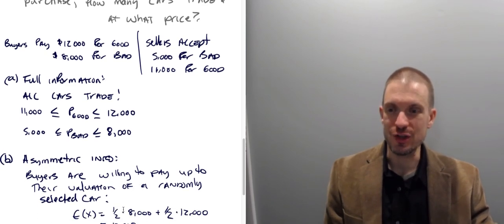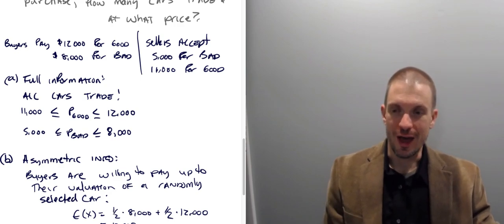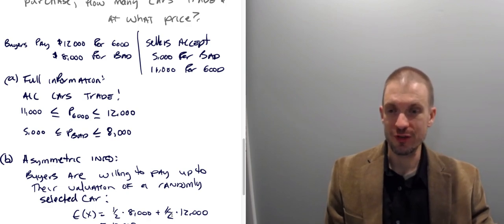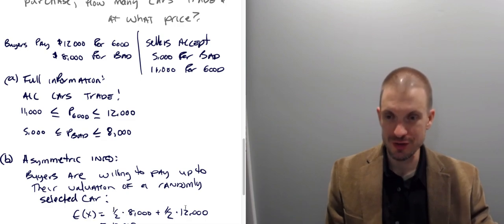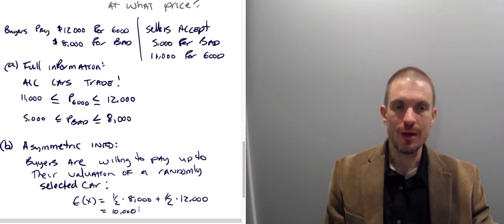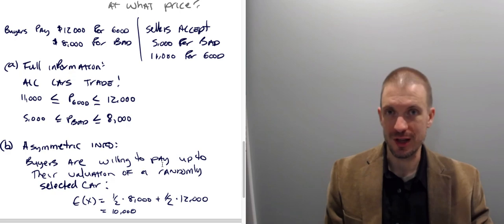So the expected value is going to be one half times $8,000 plus one half times $12,000. So this is going to be the distribution of bad cars times the valuation of buyers for bad cars plus distribution of good cars times the valuation of buyers for good cars. So it's going to be what? $8,000 times a half or times 50%. That's going to be $4,000 plus one half times $12,000. That's $6,000. So $4,000 plus $6,000 is $10,000. Buyers would be willing to pay up to $10,000 for a randomly selected car.